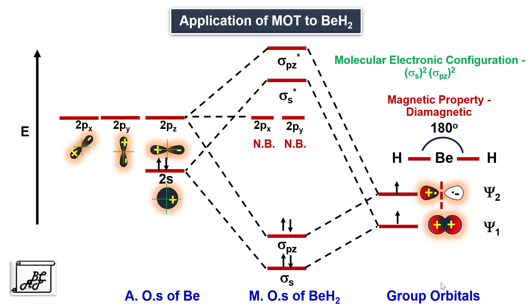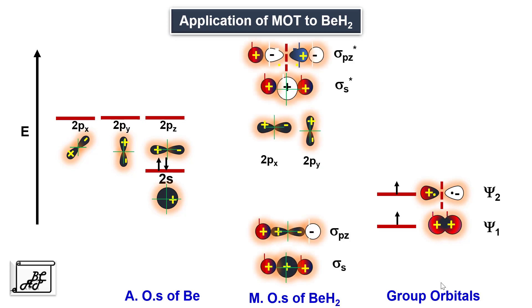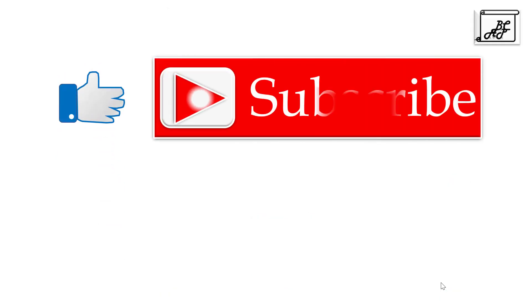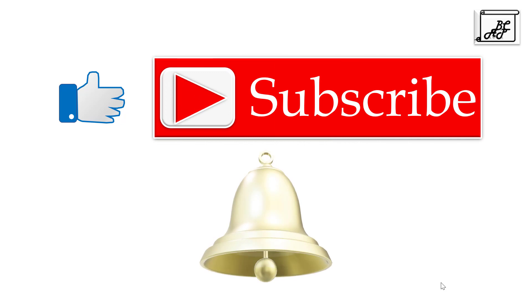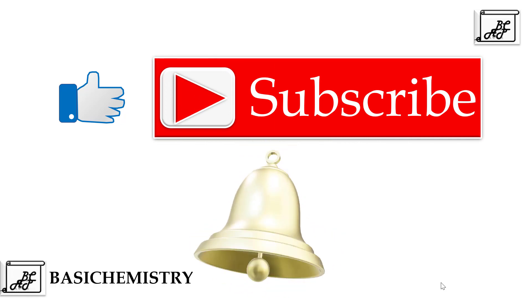When we look at the structure of various molecular orbitals, the combinations of atomic orbitals of the central beryllium atom and the group orbitals appear like this. I hope you have followed the application of molecular orbital theory to the beryllium dihydride molecule. Please click like, share, and subscribe to my channel. Also hit the bell icon to get notifications of my new videos, and keep watching Basic Chemistry. Thank you.